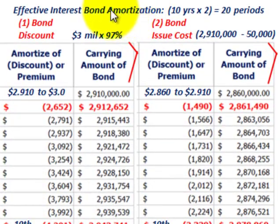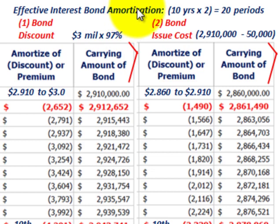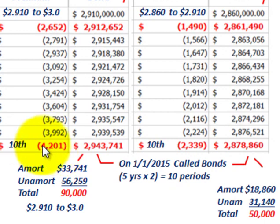When dealing with bond refundings, we have to determine any gain or loss on the bond being recalled. Originally we had a bond discount — the bonds were issued at $3 million at 97%, so we have a discount of $90,000 to deal with. We also had bond issue costs of $50,000. In both cases, for the bond discount and the bond issue costs, we would have amortized them down, either using the effective interest rate method or straight-line, up until the period of recall — the 10th period.